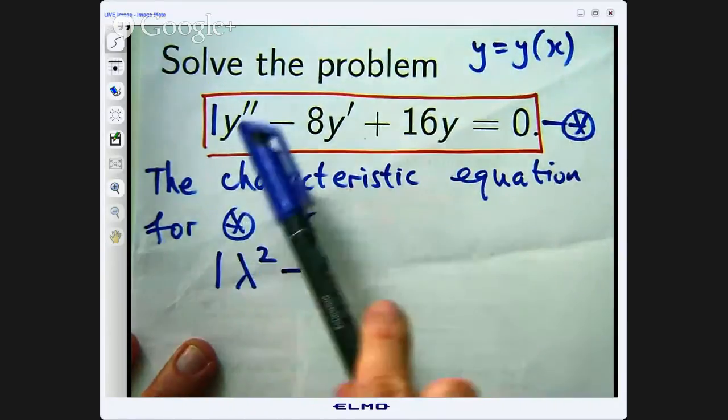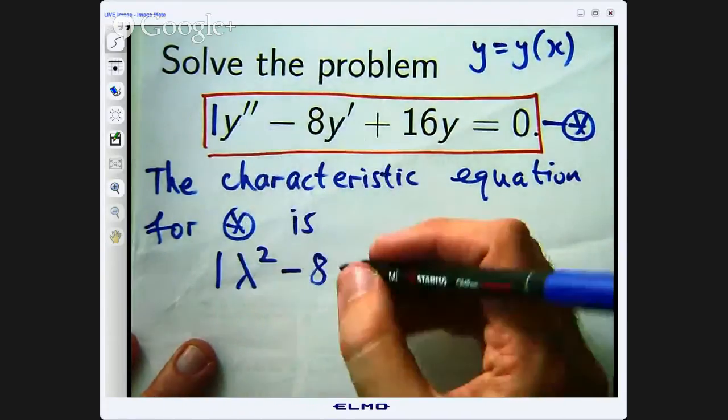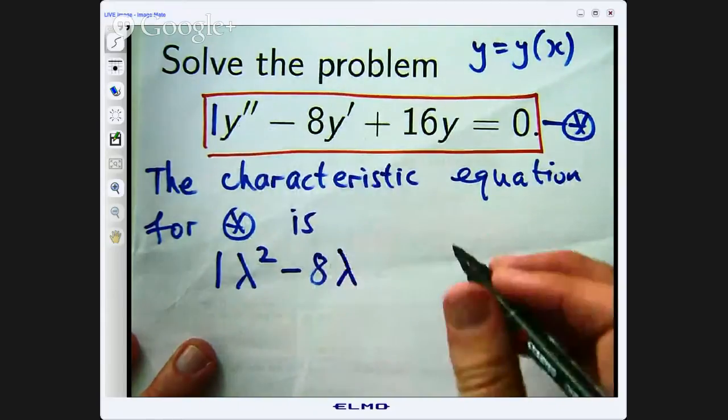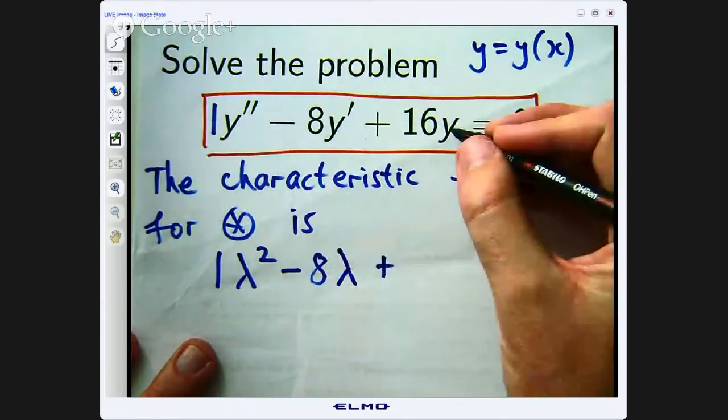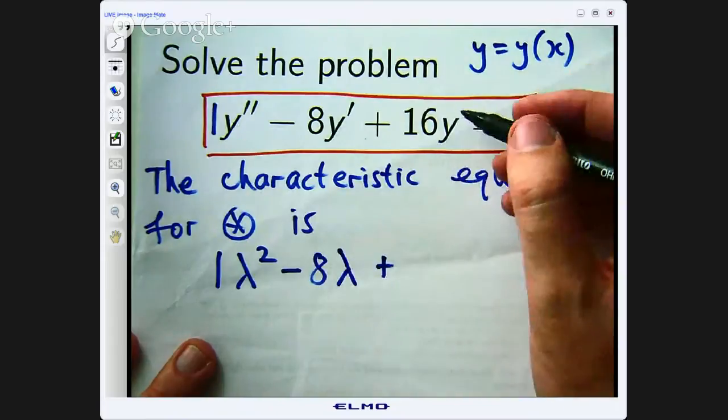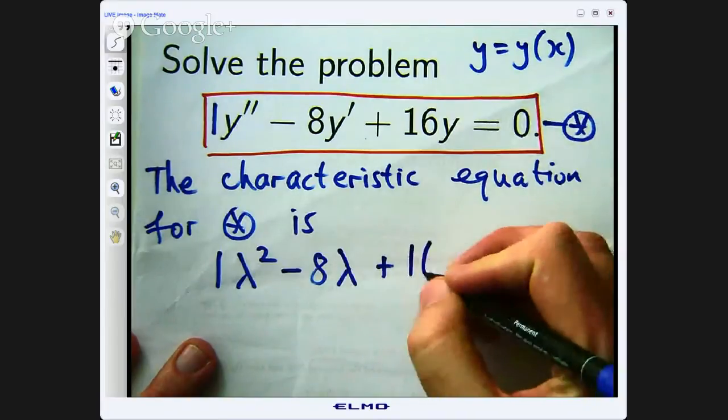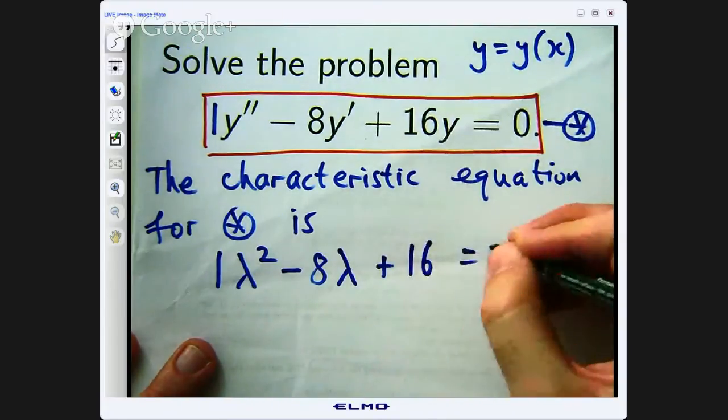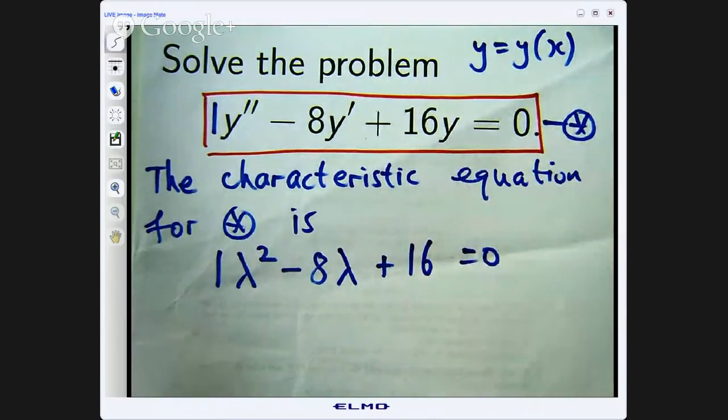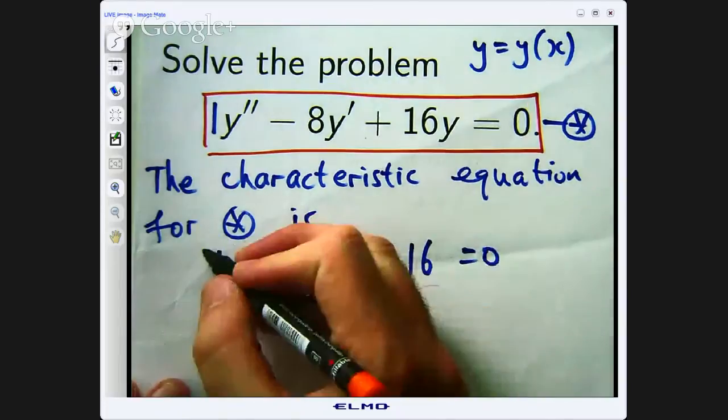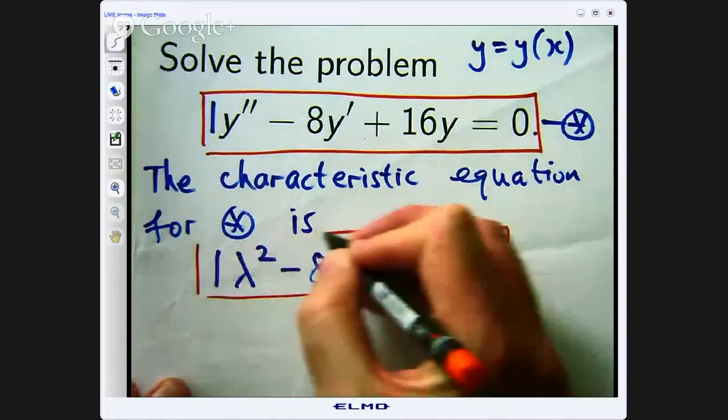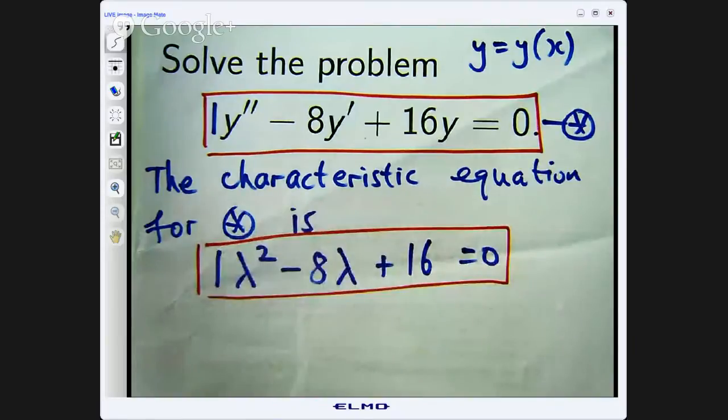The negative 8 comes down, the y prime just goes to lambda to the power of 1 and y is just a derivative of the 0 order and this just becomes a 16. So this now is a quadratic equation that you would see at high school.